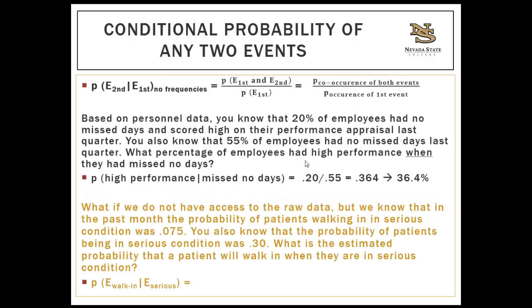Here's a situation where you don't have access to the frequencies but know the probabilities. You can use the conditional probability formula: co-occurrence of the two events divided by the occurrence of the first event (the condition). Based on personnel data, 20% of employees had no missed days and scored high on their performance appraisal, and 55% of employees had no missed days. What percentage had high performance when they had no missed days?